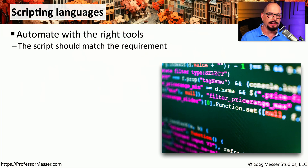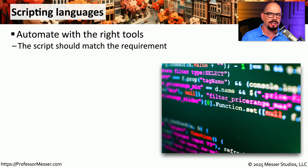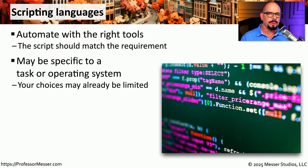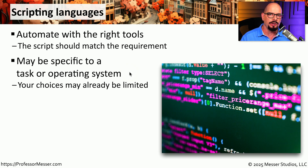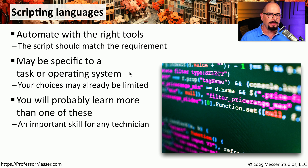One topic you'll hear quite a lot of in information technology is automation and scripting. There are a lot of different ways to automate processes, and we have a number of different scripting technologies available to us. But you have to make sure that you're using the right script for the right purpose. The type of scripting language you choose may be based on the application you're running, the task you're performing, or it might be specific to an operating system. This means you'll probably learn a number of different scripting languages so you can automate regardless of what task you're performing.